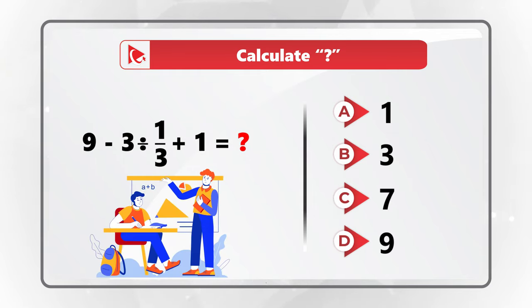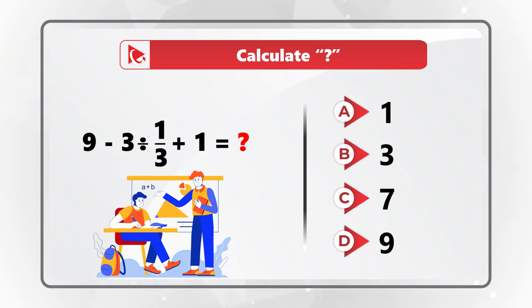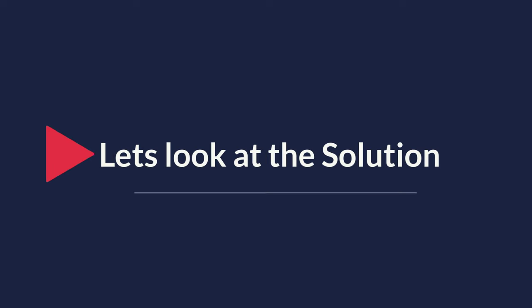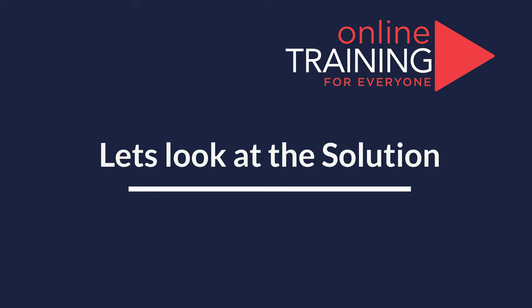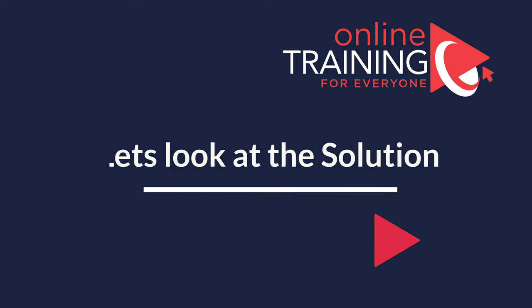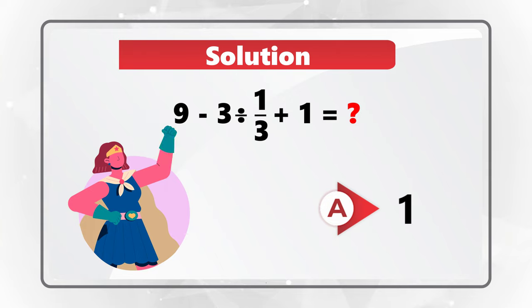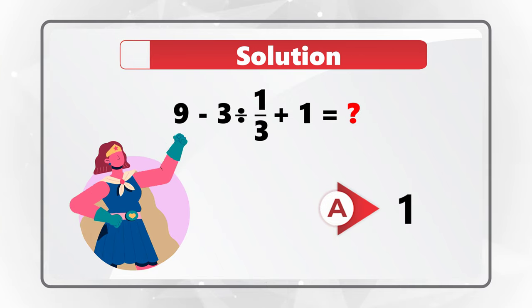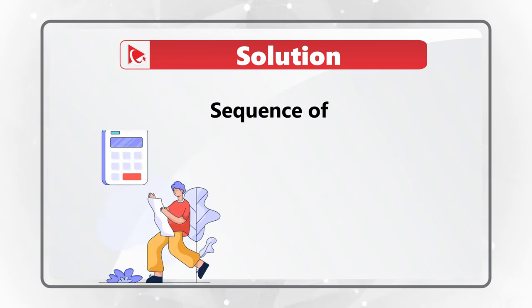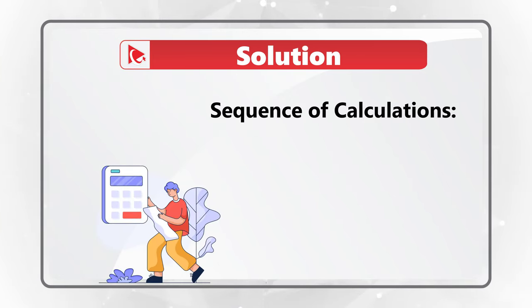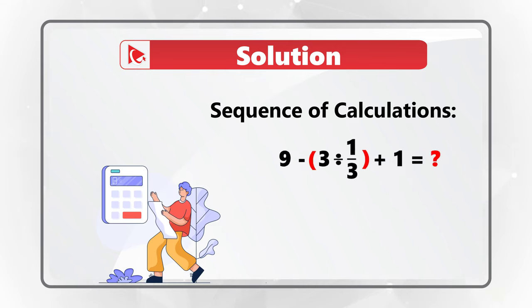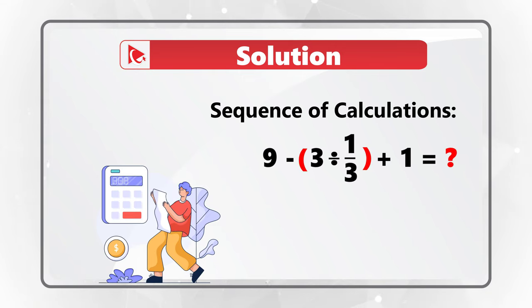Do you see the answer? Give yourself a little bit of time to see if you can calculate the solution. Ready or not, I am moving forward to share with you the correct answer. As you might have guessed, the correct answer here is Choice A, 1. But why? If you look at the expression closely, you will see that the first part that would need to be calculated is the division.